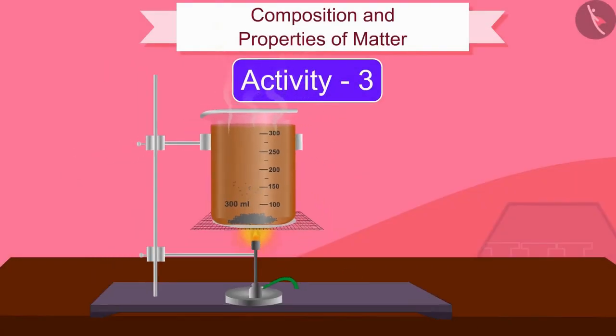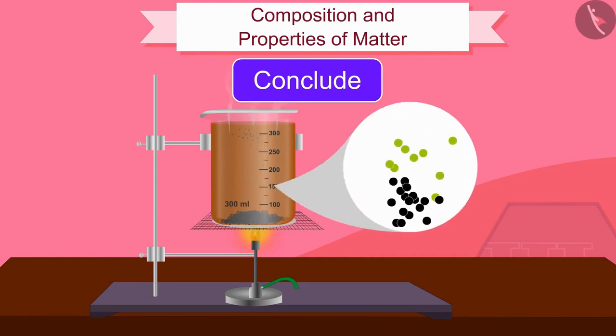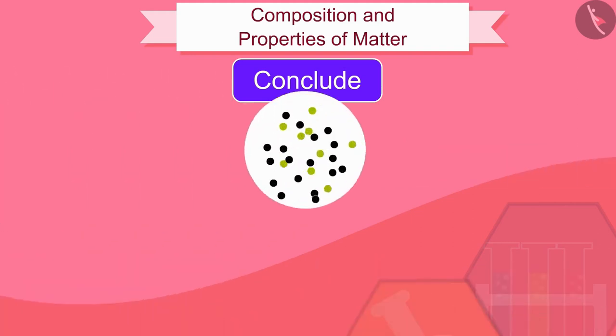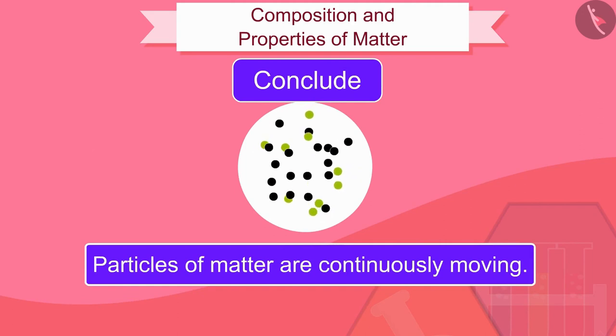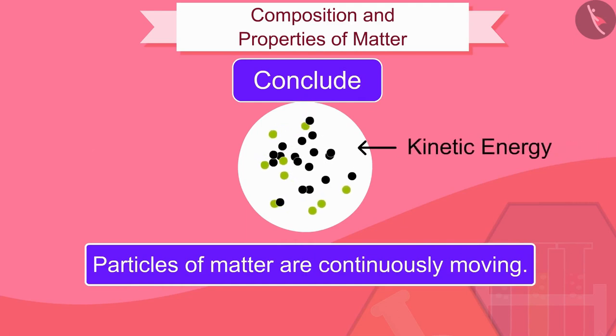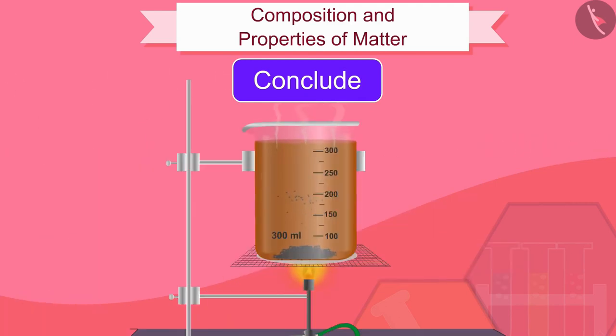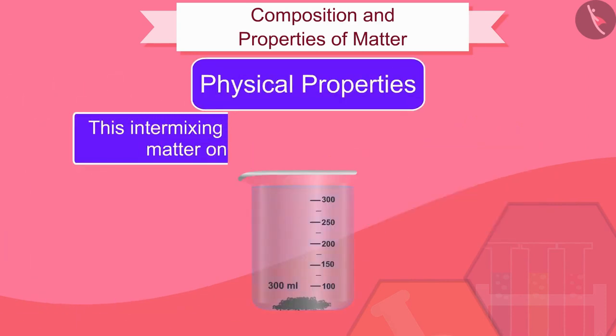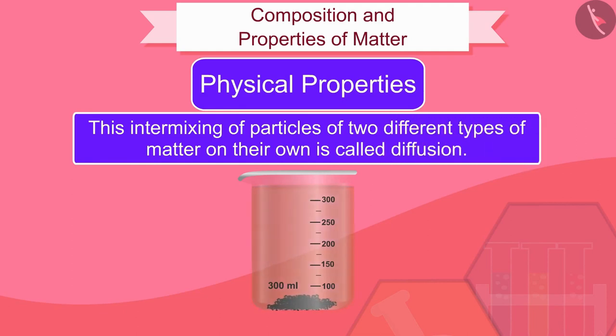From this activity, we can conclude that the particles of matter get intermixed with each other on their own. This is due to the inclusion of particles in the space. In other words, we can say that particles of matter are continuously moving. That is, they have kinetic energy. And this energy increases as the temperature increases. This intermixing of particles of two different types of matter on their own is called diffusion.